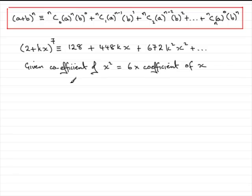So, if we've got this, then what follows? Well, the coefficient of x squared, that's the value in front of the x squared here, which is going to be 672k squared, so we can write that down as 672k squared, is going to equal six times the coefficient of x, the number or value in front of x.